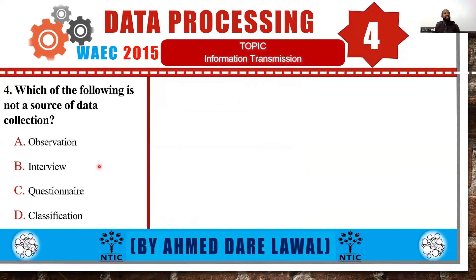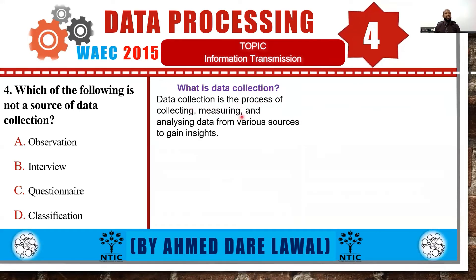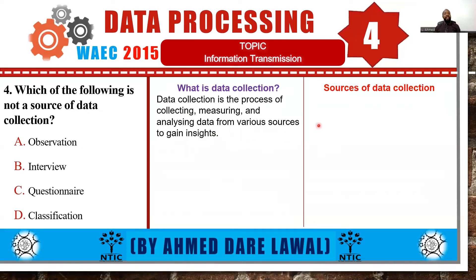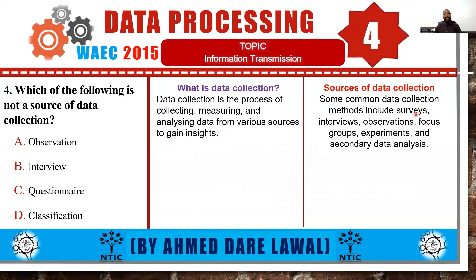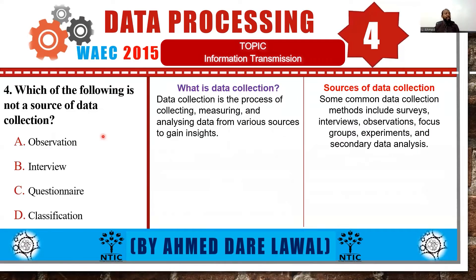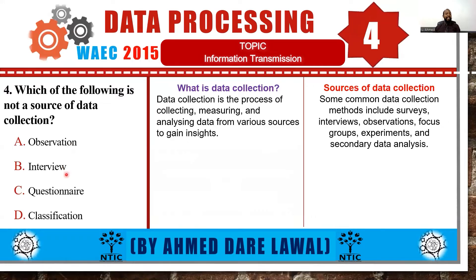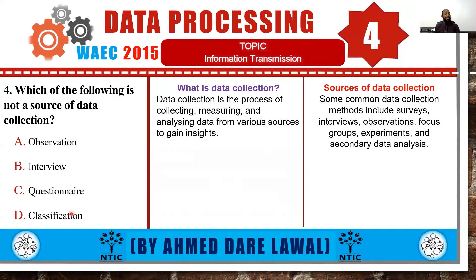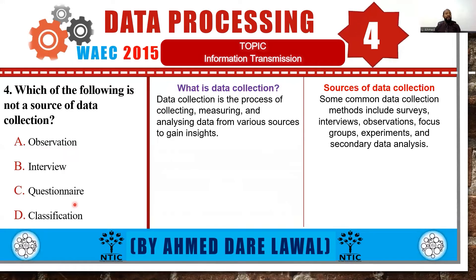Moving forward to the next question: which of the following is not a source of data collection? Data collection is a process of collecting, measuring, and analyzing data from various sources. Sources include surveys, interviews, observation, focus groups, experiments, and secondary data analysis. Observation, interview, and questionnaire are all sources of data collection. However, classification — which is about analyzing and categorizing your data — does not belong to sources of data collection. So the answer is option E, classification.